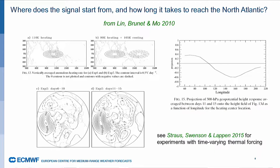They didn't get a lot of response from the first pattern, the monopole over the maritime continent, but they got a pretty strong response to the dipole. The maps at the bottom are the response in geopotential height at 500 hPa, after six to ten days after the start of the forcing. You see some strong response in the Pacific from day six to day ten, and then after another five days, so 11 to 15, they also get a response in the Atlantic that projects onto the North Atlantic oscillation.